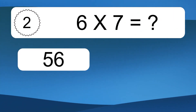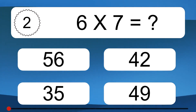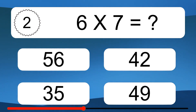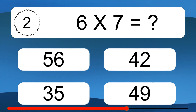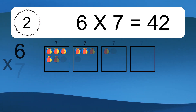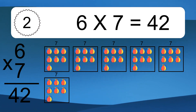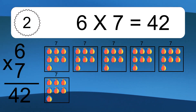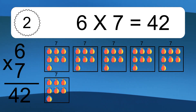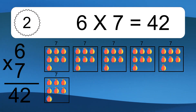6 times 7 equals what? 6 times 7 equals 42. We have 6 boxes, and each box has 7 colorful balls inside. If you count all the balls in all the boxes together, you will have 6 times 7 balls. This equals 42 balls.